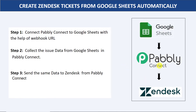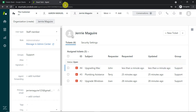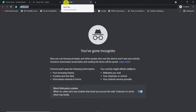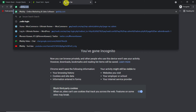Once you create a workflow integrating Google Sheets and Zendesk, all you have to do is sit back and relax — because whenever data is entered in Google Sheets, a new ticket will be created in Zendesk automatically every time. To begin the process, open a new tab and type Pabbly.com.